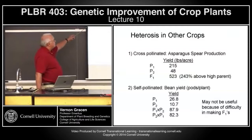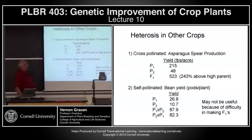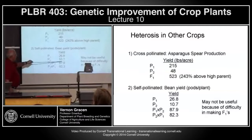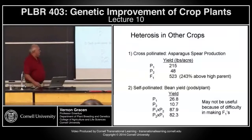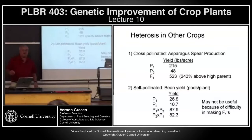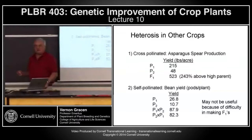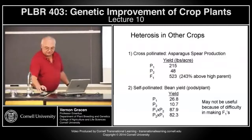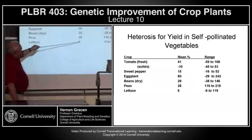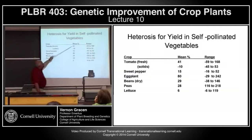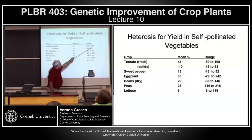Crops other than maize: look at asparagus — parent 1 yielded pretty good, parent 2 not so good, the hybrid more than twice the yield of the best parent. In beans, neither parent yielded very good, but the hybrid was almost four times the yield of the best parent. The problem with beans is it's difficult to make enough F1 hybrid seed reliably for farmers. In some self-pollinated vegetables, the average heterosis ranges from 41% for yield in tomatoes down to 6%, with a wide range between different crosses of those vegetables.